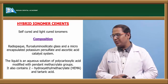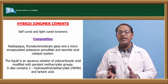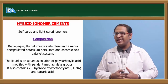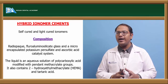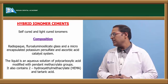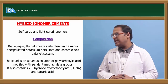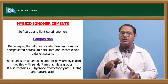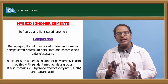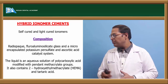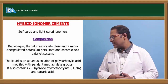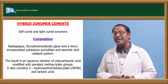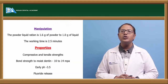Hybrid ionomer cement is a mixture of ionomer cement with resin components — it is both self-cured and light-cured. It is radiopaque, contains fluoro-aluminosilicate glass, micro-encapsulated potassium persulfate, and ascorbic acid as a catalyst. The liquid is an aqueous solution of polycarboxylic acid modified with methacrylate groups and also contains HEMA (hydroxyethyl methacrylate) and tartaric acid.